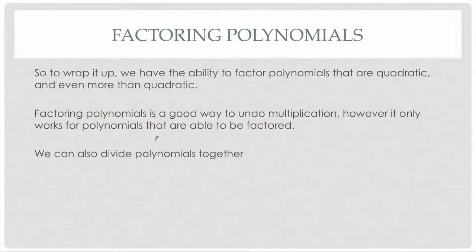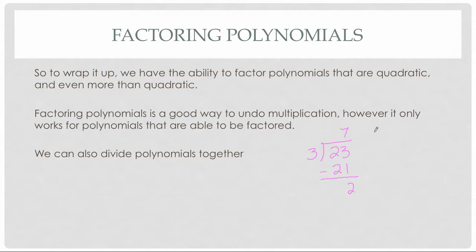That's what we'll work on for the next two examples — methods to take any two polynomials and divide them. Some will divide nicely leaving no remainder; some will divide leaving a remainder. A quick review of what we mean by long division: take 23 ÷ 3. 3 goes into 23 seven times; 7 × 3 = 21; subtract to get remainder 2. So 23 ÷ 3 = 7 remainder 2, or 7 and 2/3. That's long division — we can do the same thing with polynomials.